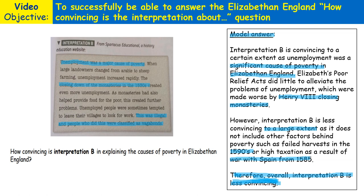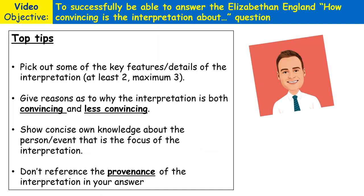Let's recap those top tips for the 'how convincing is the interpretation' type question. Pick out two or three features or details from the interpretation and give your judgment on how convincing or less convincing you think those are. Make sure you give reasons as to why the interpretation is both convincing and less convincing. The best answers will state that the interpretation is convincing to a certain extent — there'll be balance between those two judgments. Show concise own knowledge about whatever event or person is the focus of the interpretation. And don't reference the provenance of the interpretation in your answer.